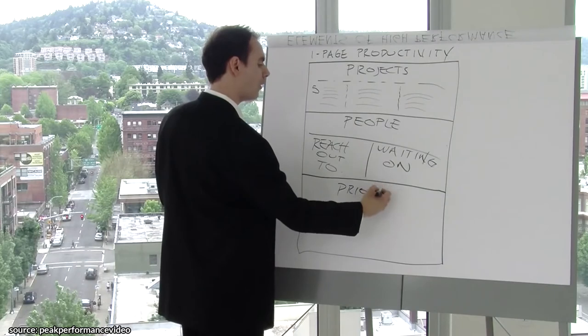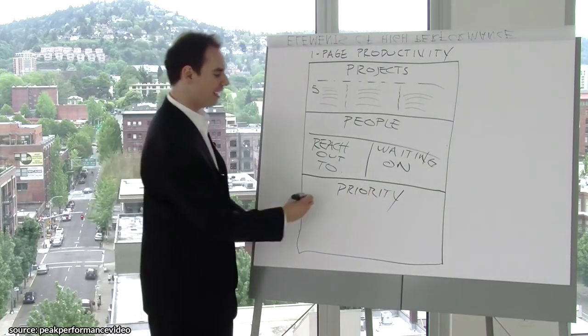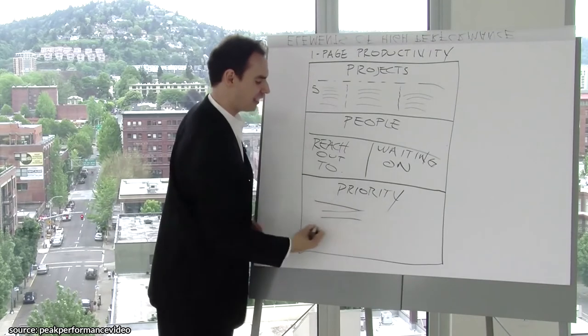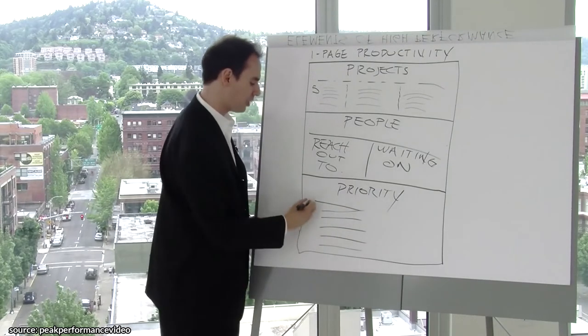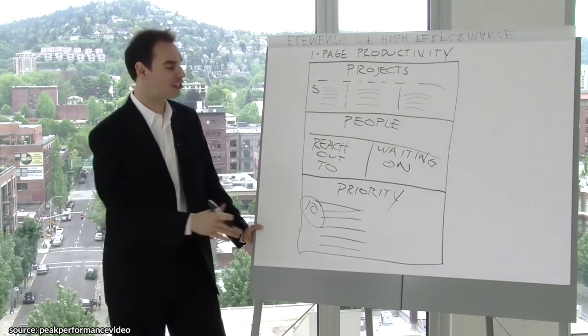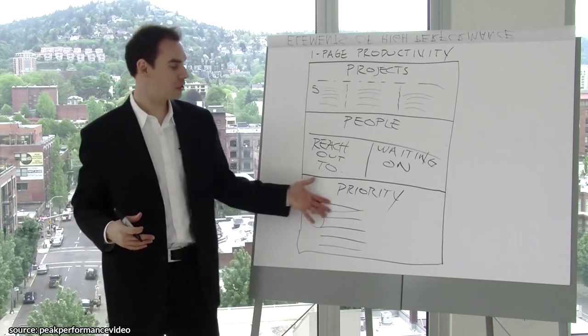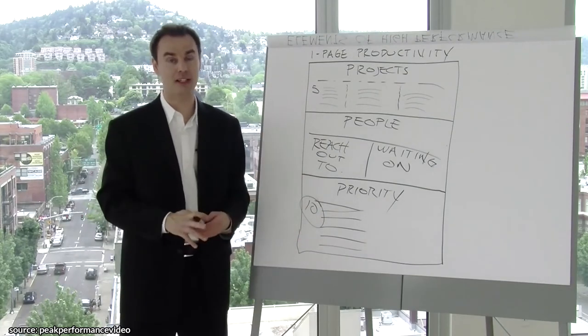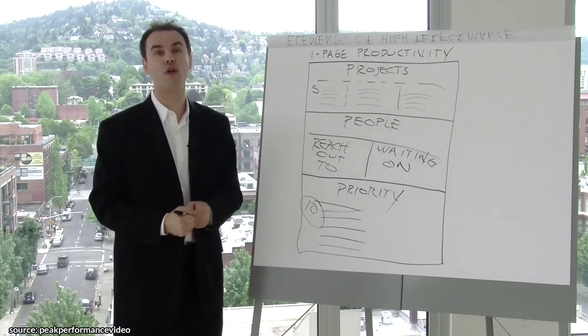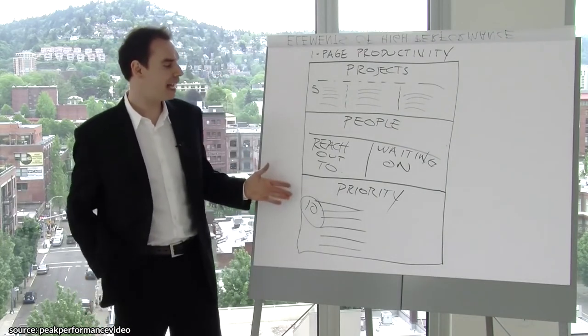Then the next category is the priority category. Your priority category is: what are the 10 things that you've got to accomplish today? These are the 10 must-do items. This is sort of like your to-do list, but it's ranked in order of most importance. To-do lists are great, I'm all for day planners, but at the end of the day you've got to think about what are my real priorities today.